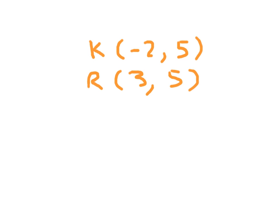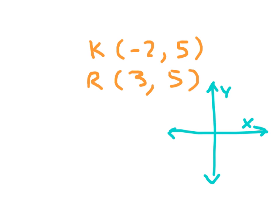Here we have the points (-2, 5) and (3, 5). It helps to think about what this looks like on a coordinate plane. The point (-2, 5) would be plotted at negative 2 on x and 5 on y. For (3, 5), we go right to 3 and up to 5. This is a horizontal line segment. We're asking how far it is from negative 2 to 3: counting through -1, 0, 1, 2, 3 — that's 5 units. So this line segment is 5 units long.